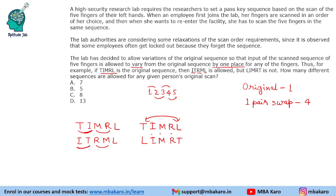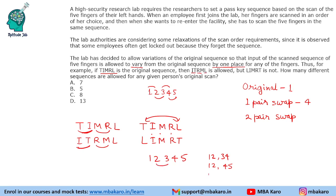We can also have two pairs swapped simultaneously. For positions 1, 2, 3, 4, 5: swapping 1-2 can be paired with swapping 3-4, or with swapping 4-5. Swapping 2-3 can be paired with swapping 4-5. Swapping 3-4 cannot be paired further without overlap, and 1-2 is already counted. So there are three cases where two pairs of adjacent fingers are swapped.